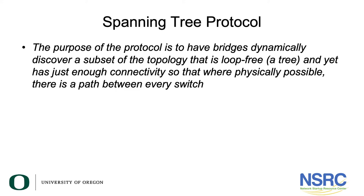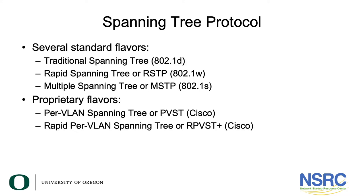When you look at spanning tree protocols, there are several standard flavors: traditional spanning tree standardized in 802.1d, Rapid Spanning Tree (RSTP) in 802.1w, and Multiple Spanning Tree (MSTP) in 802.1s. These are all IEEE standards. There are also proprietary flavors done by Cisco: the older Per-VLAN Spanning Tree (PVST) and Rapid Per-VLAN Spanning Tree (RPVST+).